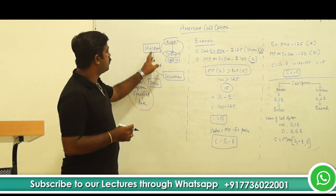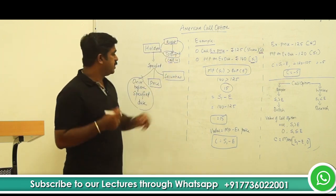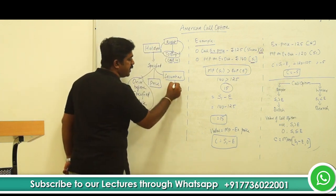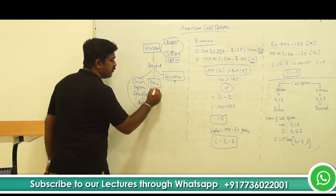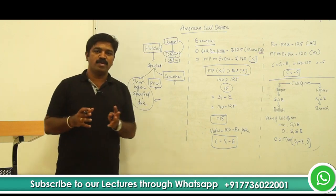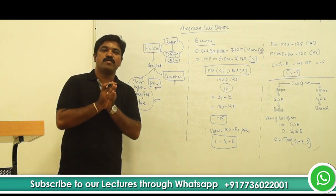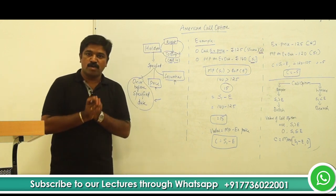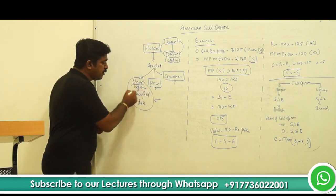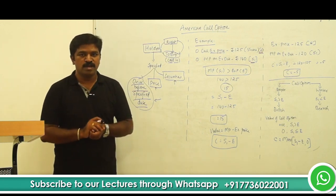The holder of the option is getting the right to buy, or say right to call in. He is getting the right to buy specified securities at a specified price on or before a specified date. If the owner of the option is getting the right to buy specified securities at a specified price on or before a specified date, we call it a call option. We call it an American call option because this is on or before a specified date. If it is going to be only on a specified date, we call it a European call option.